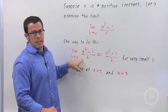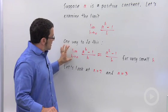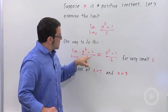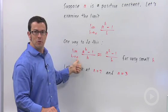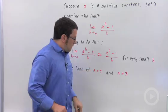One way to do this is to make the observation that this limit is going to be approximately equal to the difference quotient itself as long as h is chosen small enough, right? Because I'm taking the limit as h approaches 0.